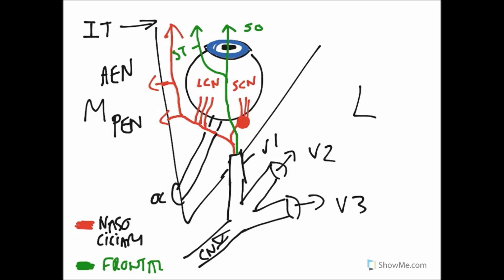The frontal nerve is quite simple with large sensory coverage. The supratrochlear nerve innervates the conjunctiva and the skin over the upper eyelid and the forehead. The supraorbital nerve, the larger of the two, innervates the scalp all the way back to the middle of the head, as well as the forehead, the upper eyelid, and conjunctiva.